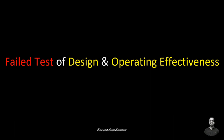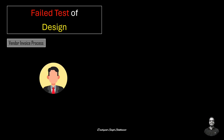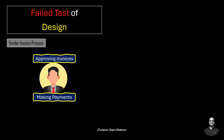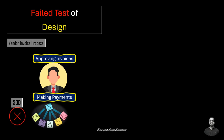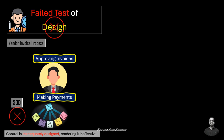Let's take an example where both the test of design and test of operating effectiveness have failed. Consider an organization that processes vendor invoices, where the same person is responsible for both approving invoices and making payments. This lack of segregation of duties violates SOD principles, since the control allows a single individual to initiate, approve, and execute payments. The auditor identifies this design flaw and reports it as a failed test of design — the control is not designed properly and is ineffective even if perfectly executed.